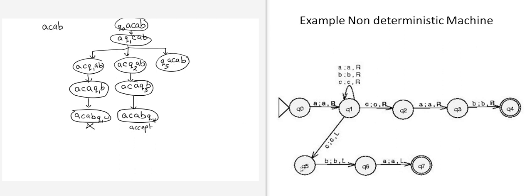Finally, at Q5 we read A, but there is no transition for A, so this branch dies. That is how you trace a non-deterministic Turing machine.